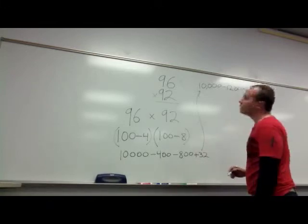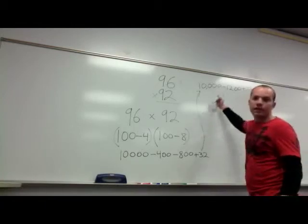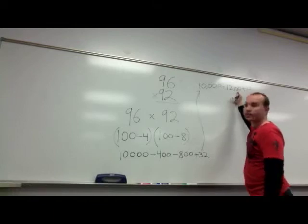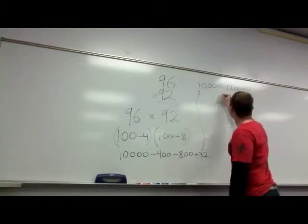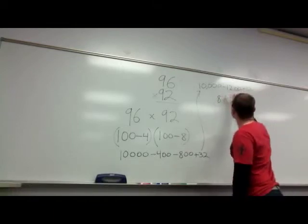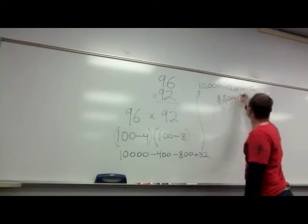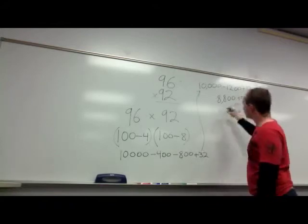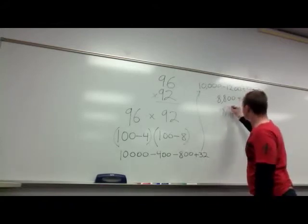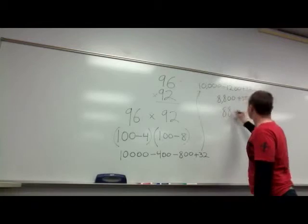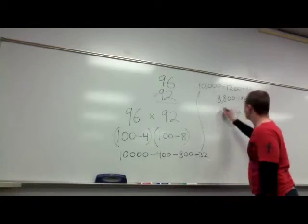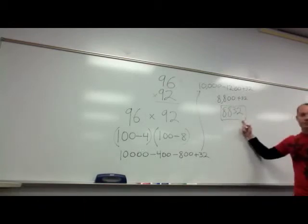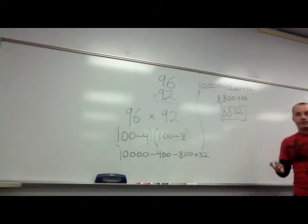Now if I did my math right, 10,000 minus 1,200 will give me 8,800. Plus 32. Put them together. And you get 8,832. The same answer that we got before.